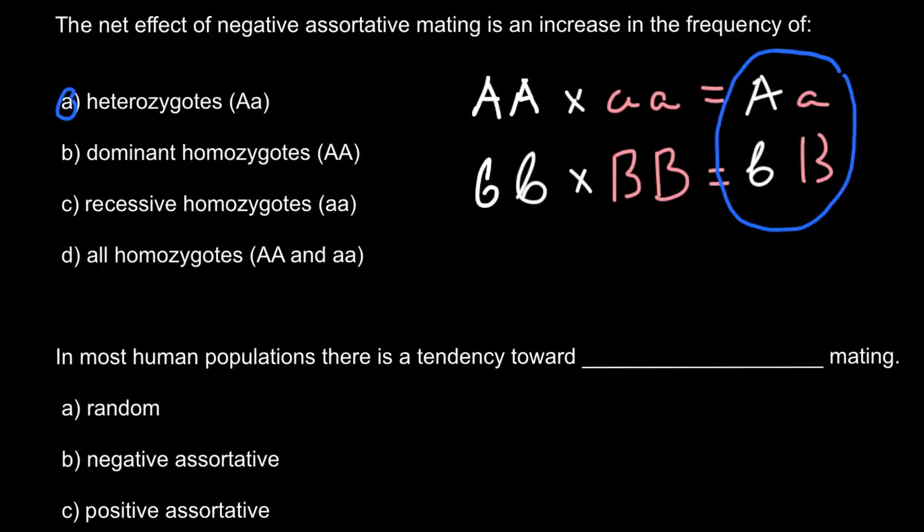And as you already know from my explanation of the previous question, most people tend to mate with people who belong to their own group, who look like them, who have the same cultural and ethnic background. And this is answer C.